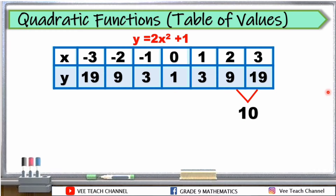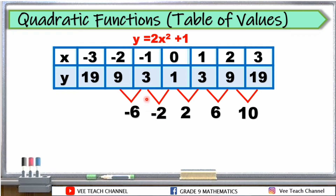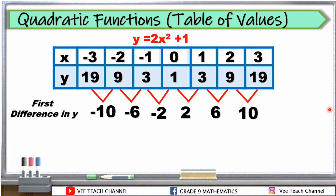How about sa y? Ano kaya yung mga differences ng mga numbers natin sa ating y values? 19 minus 9, we have 10. 9 minus 3 is 6. 3 minus 1 is 2. 1 minus 3 is negative 2. 3 minus 9 is negative 6. 9 minus 19, the answer is negative 10. Hindi siya katulad ng x natin na same difference. Sa x kasi, 1 yung common difference nila. Pero dito, magkakaiba. Ito yung tinatawag nating first difference in y.